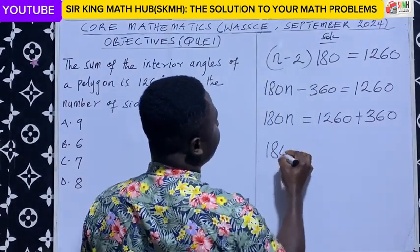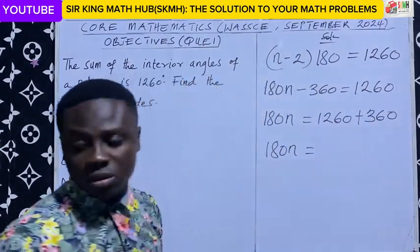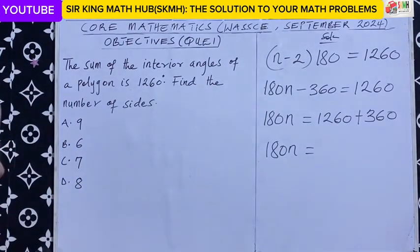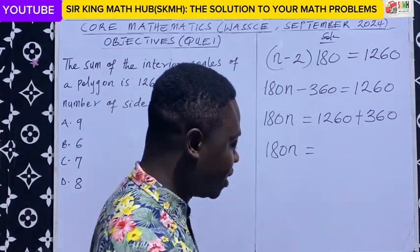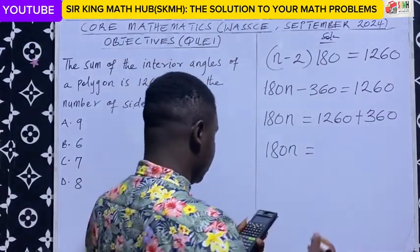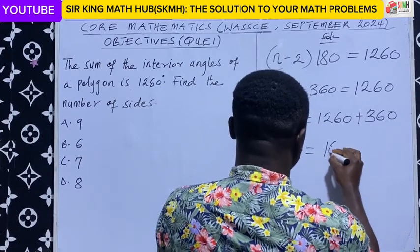So we have 180n. Let's simplify. 1260 plus 360, I'm having 1,620.